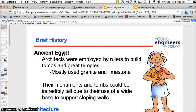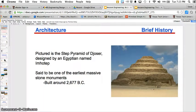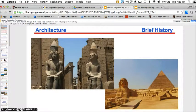Architects were employed by rulers to build tombs and great temples. Major material being used at this time was granite and limestone. One of the earliest Egyptian architecture forms is the Step Pyramid. There are some more examples of Egyptian architecture.